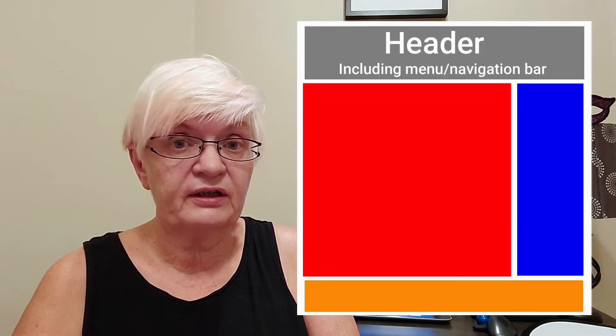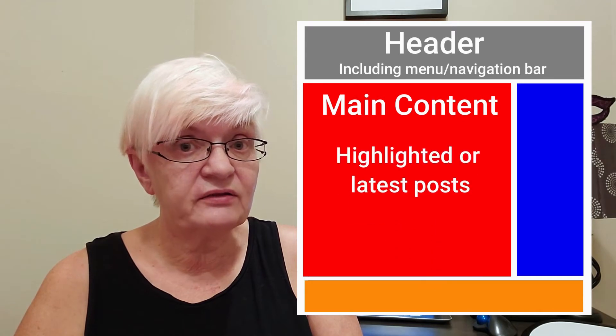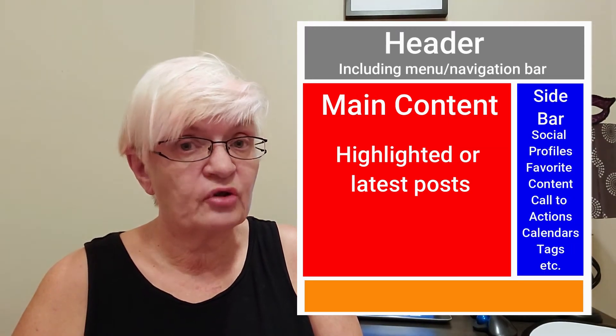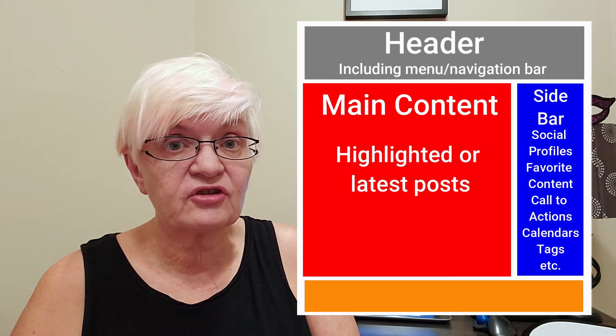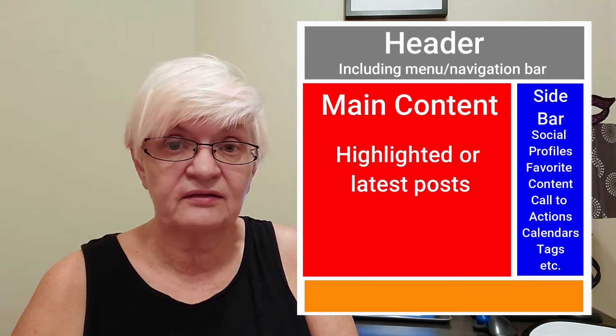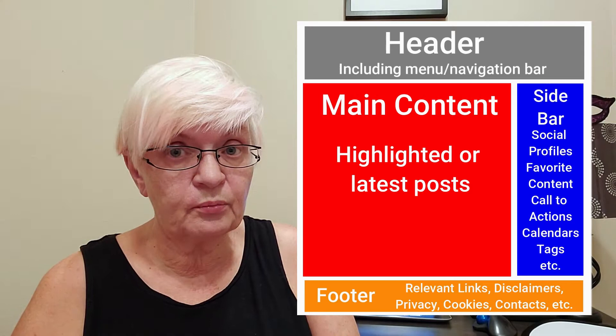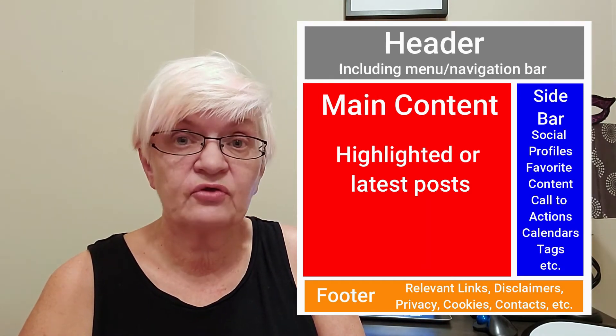Let's first take a look at the structure of a blog, and then we will talk about content. Up here you will see a model that most bloggers follow when it comes to the layout of a blog. You have the header, which usually includes a menu or navigation. The main content is where you highlight or present the latest blogs. In the sidebar you have information like social profiles, favorite content, call to action, calendar, and tags.